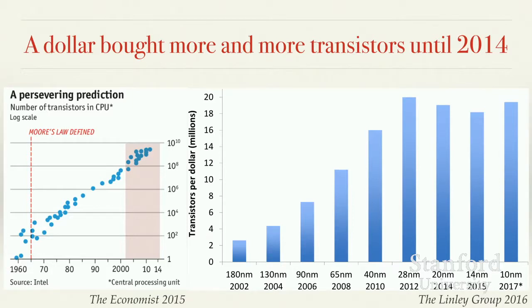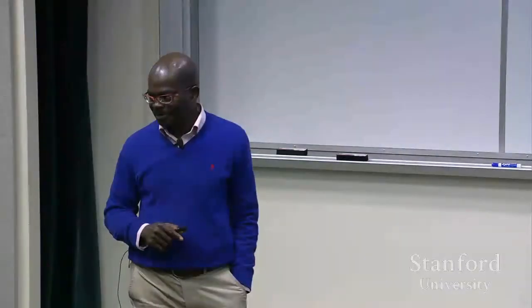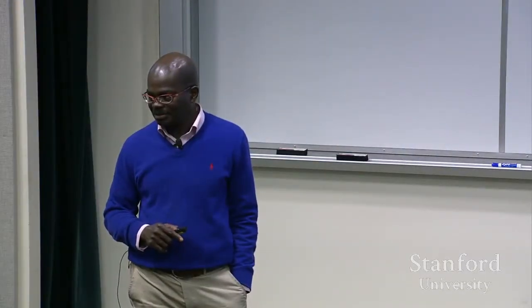People don't give enough credit to the inverse square law. It's basically how long it takes for you to halve a linear dimension — actually about three years — but you get four devices instead of one. It really is that simple. Not enough people credit the inverse square law.